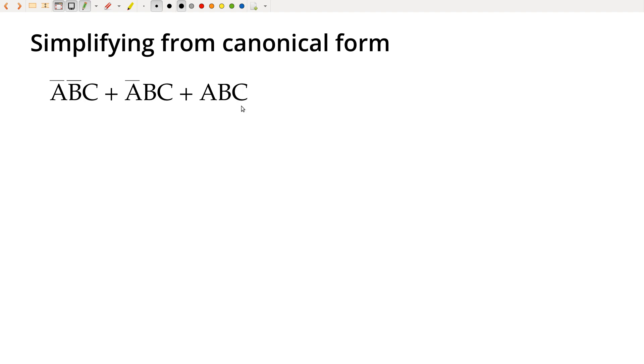Right away you might notice there are some commonalities. I've got an A here, so we've got A and C, or not A and C, and not A and C over here. So immediately I can factor those out. We've got not A and C, and then we've got not B, or and then we've got not A and C, and just B. And then we still have or A, B, C.